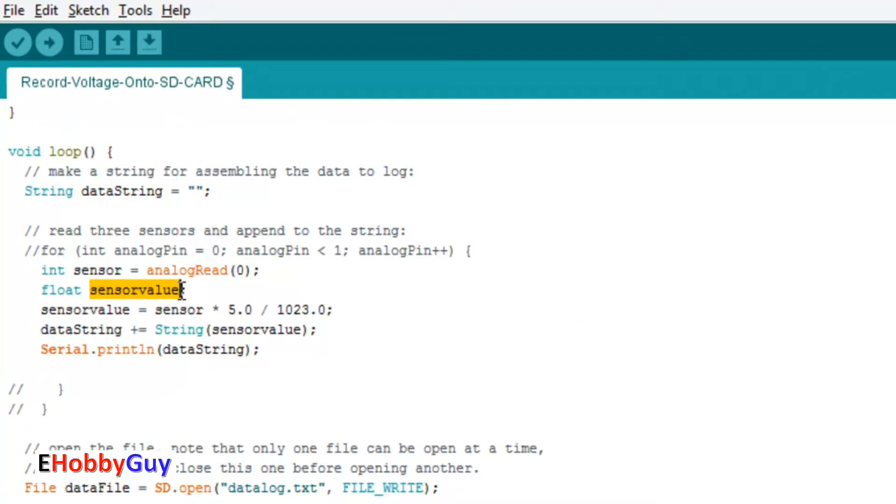I create a floating sensor value because this sensor reading is actually an integer and we have to multiply by five and divide by 1023 as a standard conversion. As we know, analog values are read between zero and 1023 and we're reading between zero and five volts, so this is the conversion. This floating sensor value gives me decimal places. Then the data string function converts that number into a string because the SD card only accepts strings.